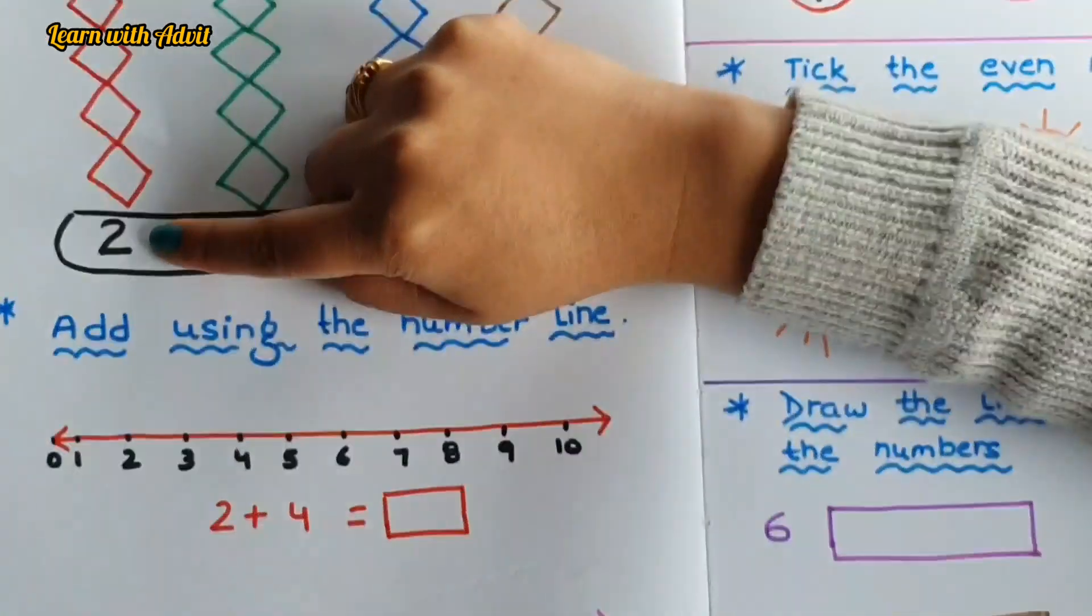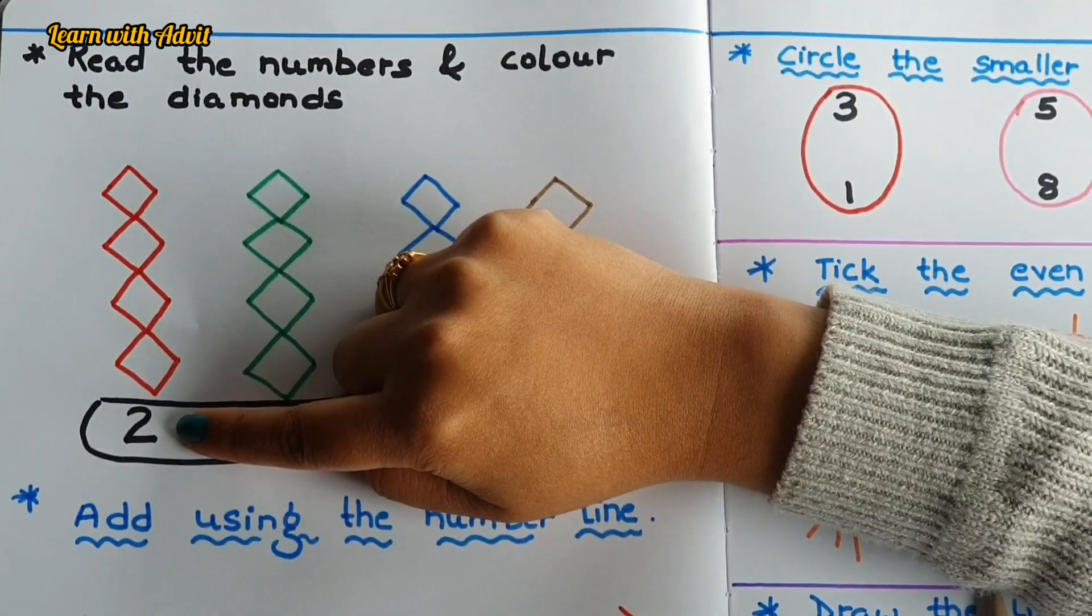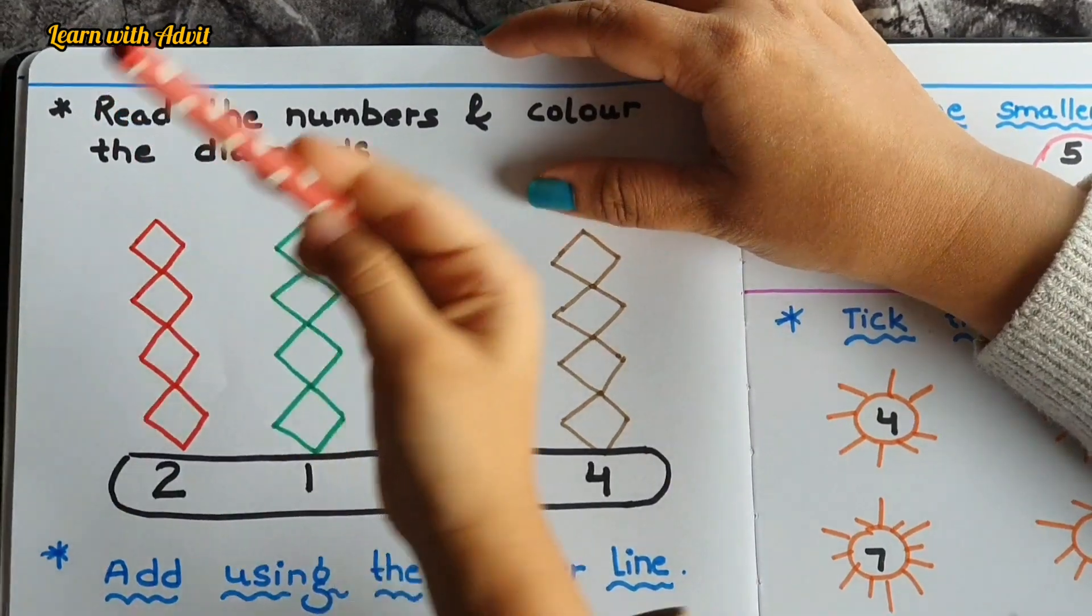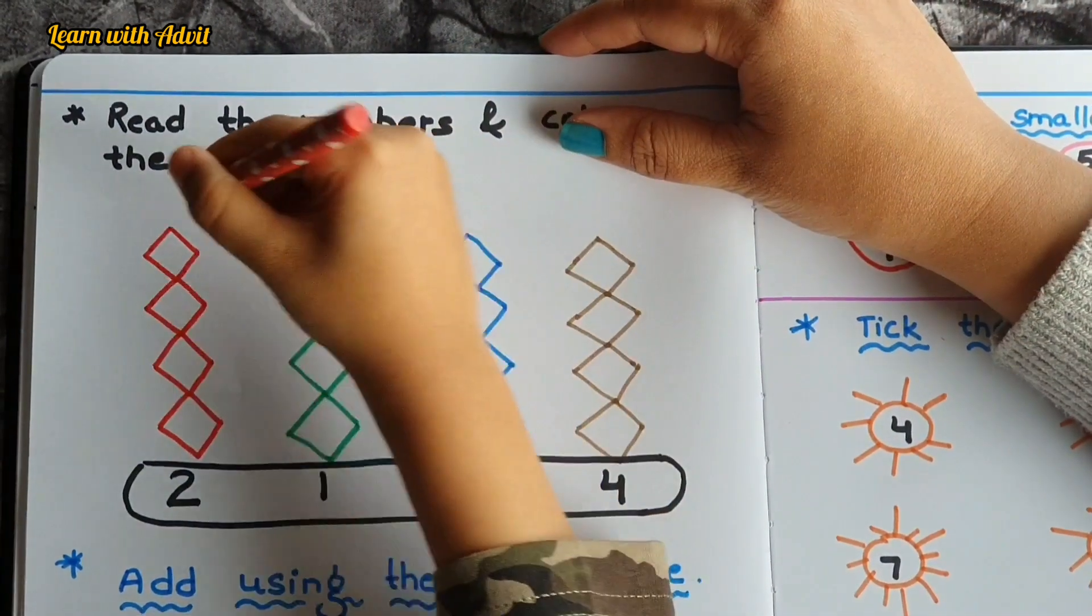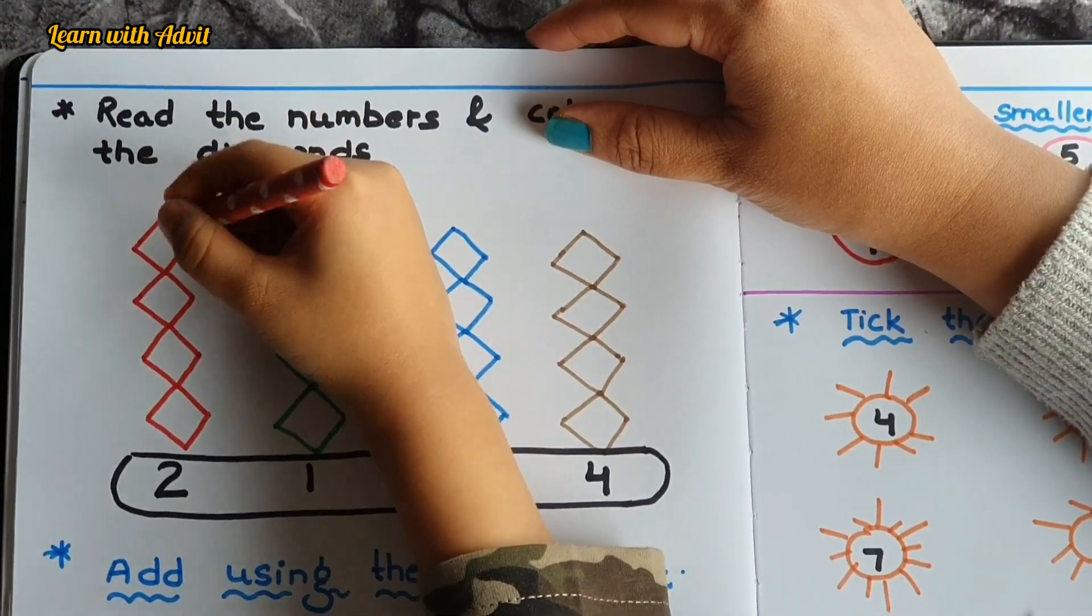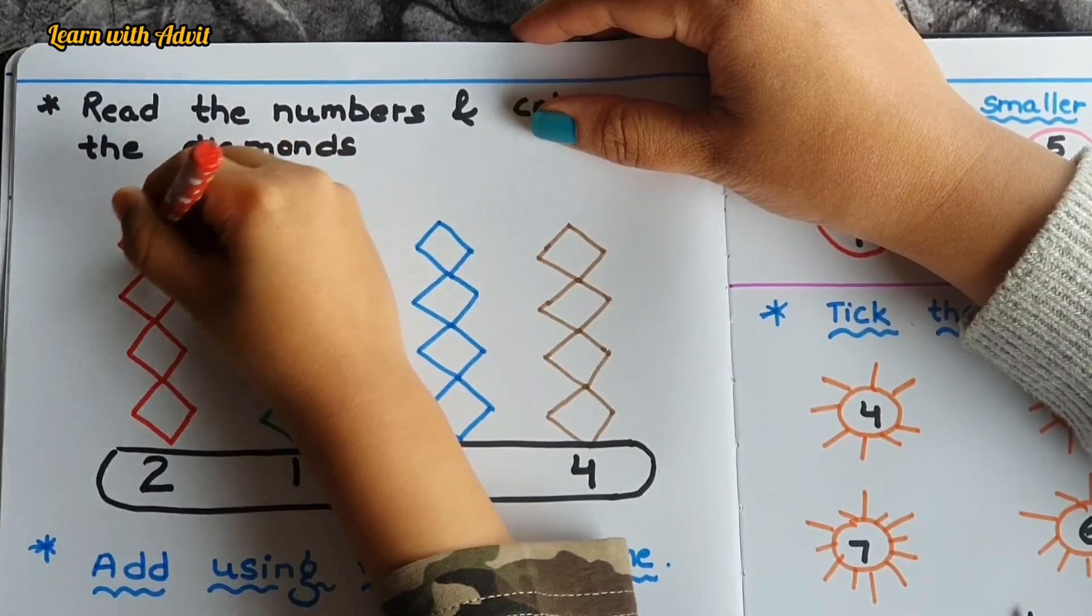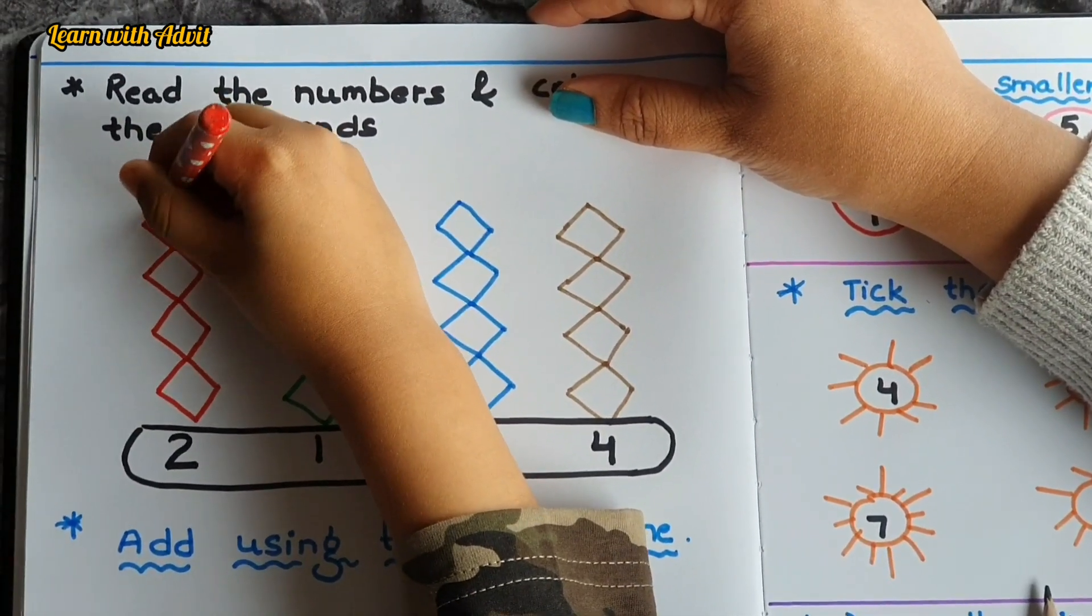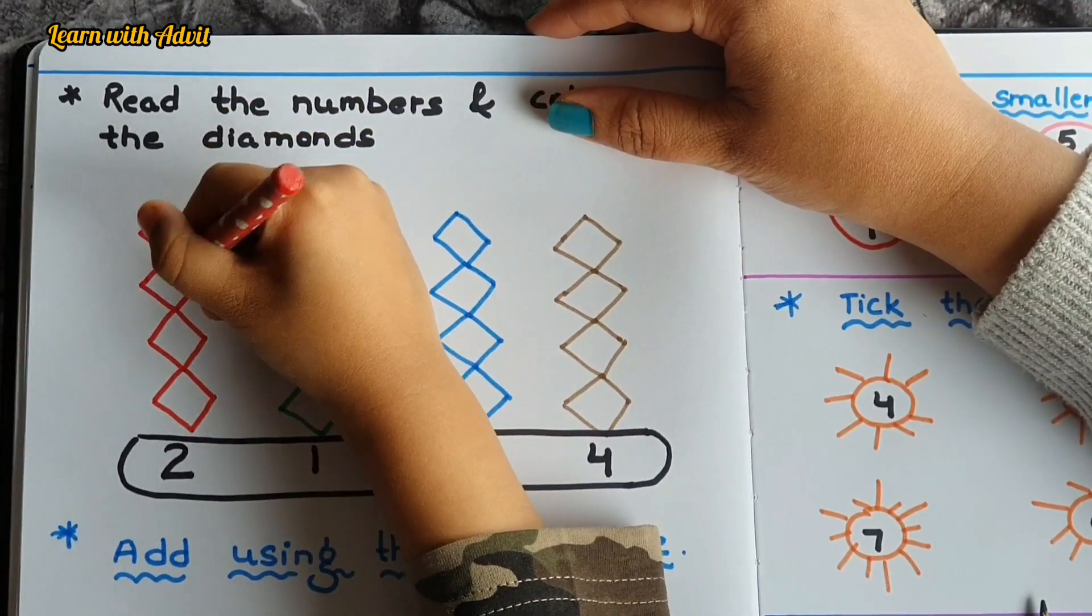Two. So how many diamonds you have to color? Two. Very good, do it. Do fast. No, yes. One, one, one, two, two.